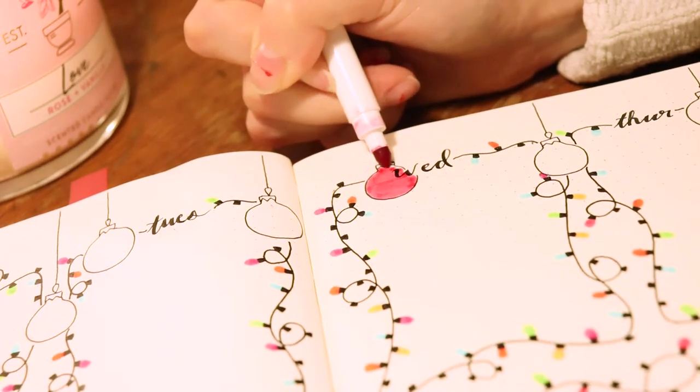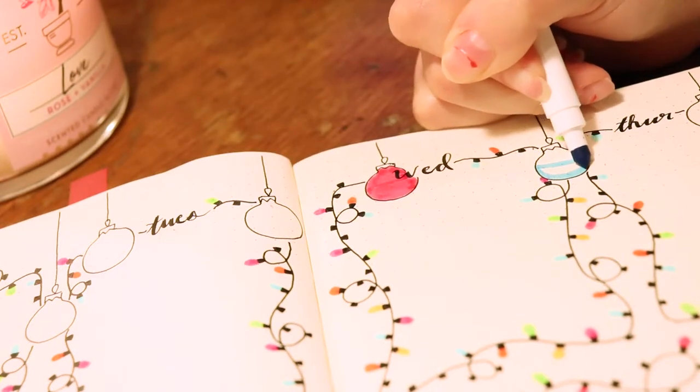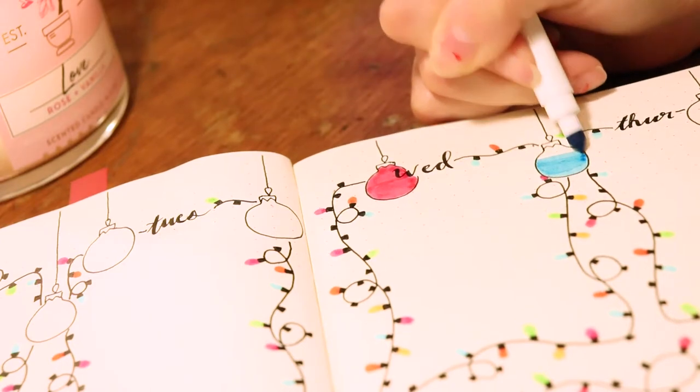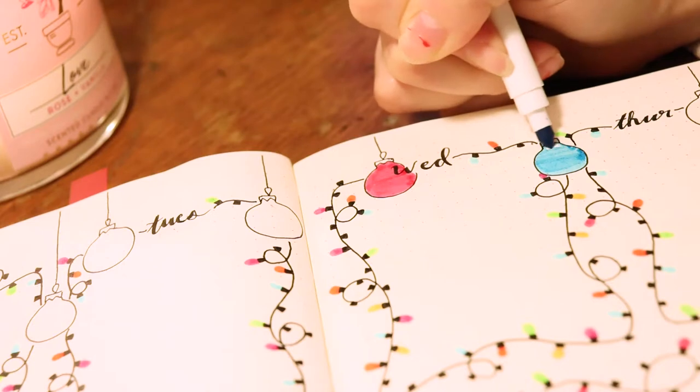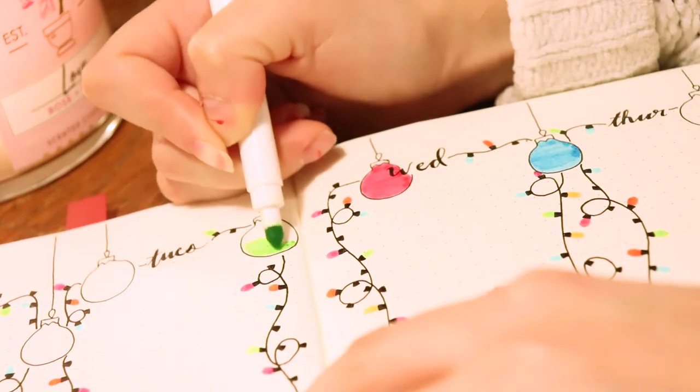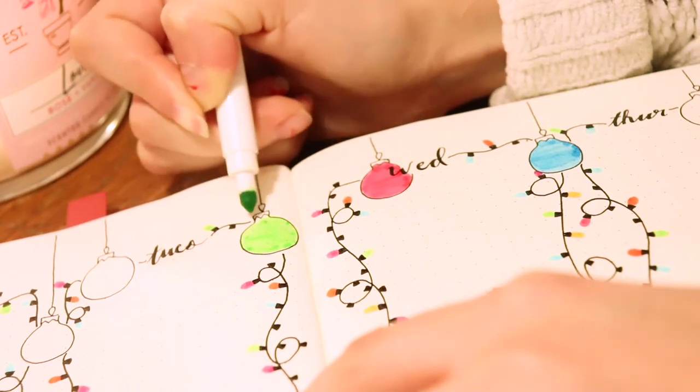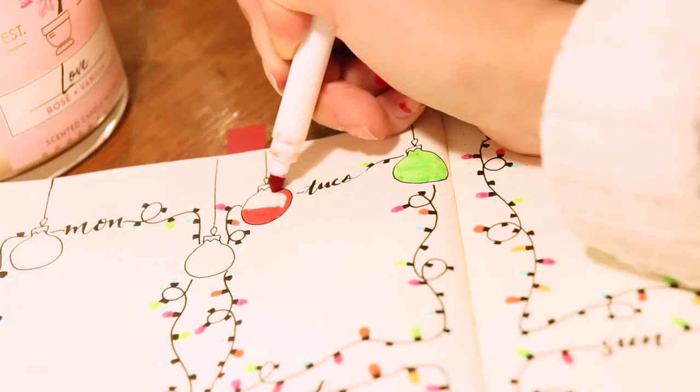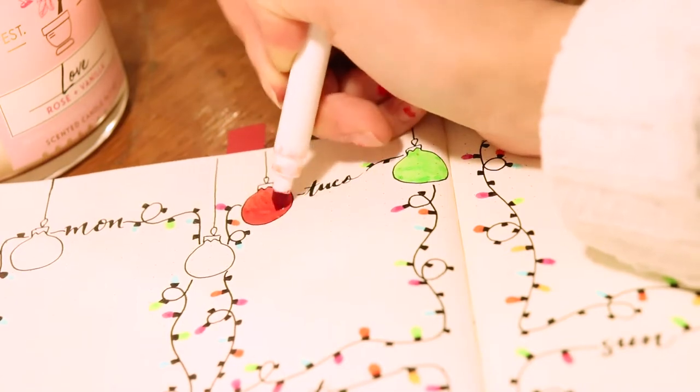Now I'm coloring in the ornaments. This is also the super fun part. I think I decided to take a break from the little Christmas lights because it is really tedious, as much as it is really therapeutic. I went in to color the different ornaments. Obviously you can make this any color that you want. You can make them have designs, but I just wanted it to be simple. I just wanted to color them all one distinct color.